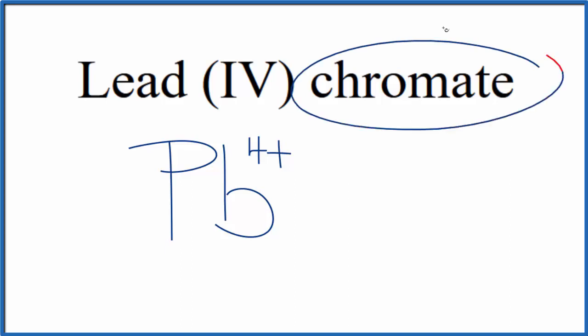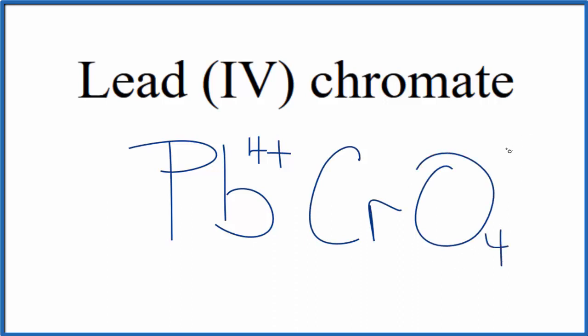For the chromate, you're not going to find that on the periodic table. It ends in ATE, that means it's a polyatomic ion. So you either memorize that the chromate ion is CrO4, and the whole thing has a charge of 2-, or if you're allowed, you look it up on a table of polyatomic ions.